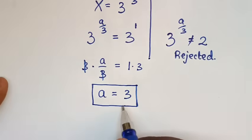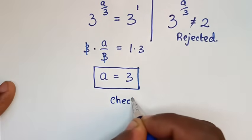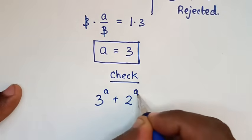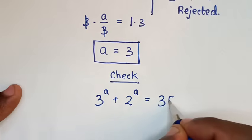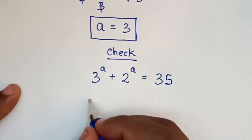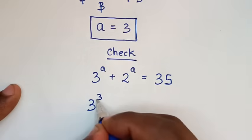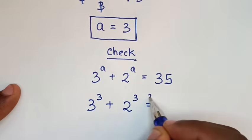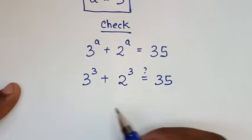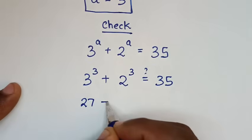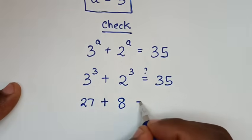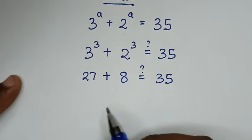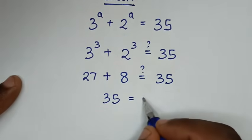We have only this solution. Now let's check this answer if it is correct. For the original problem, which is 3 power of a plus 2 power of a is equal to 35 — here it will be 3 power of 3 plus 2 power of 3. Is it equal to 35? From 3 power of 3 it is 27, plus 2 power of 3 it is 8. 27 plus 8 is 35, it is equal to 35. So the left side and the right side are equal, so it is true for the value of a equal to 3.